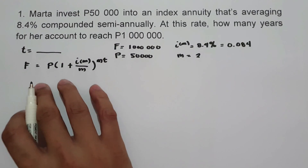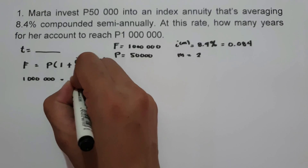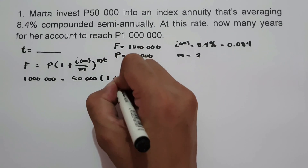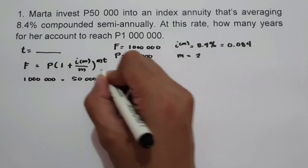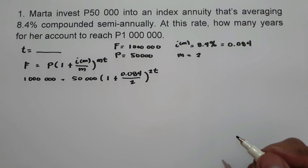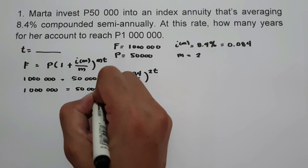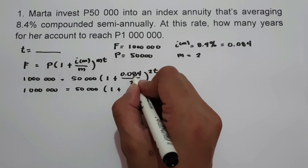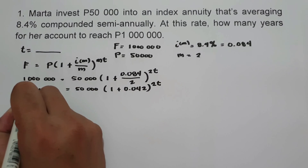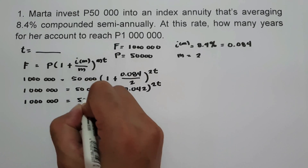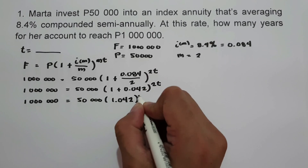Now let us substitute the given values into the formula. So: 1,000,000 equals 50,000 times the quantity of 1 plus 0.084 divided by 2, raised to 2T. Simplifying: 0.084 divided by 2 is 0.042. Then adding: 1 plus 0.042 equals 1.042, raised to 2T.